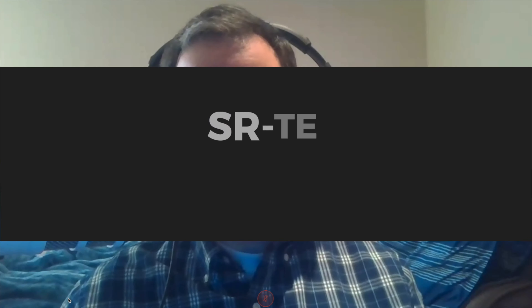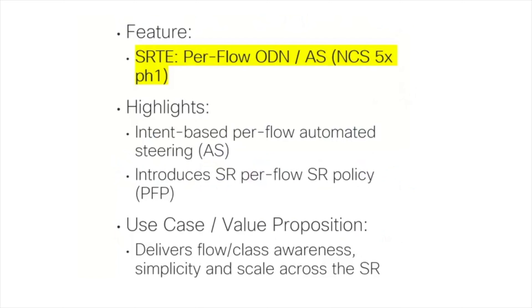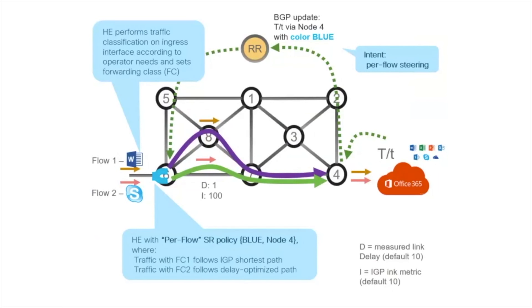Now we cover SR Traffic Engineering innovations in IOS XR 7.2.1, focusing on per-flow ODN — On-Demand Next Hop — and per-flow automated steering. The objective is to take intent-based automation to the next level. Automated steering — the ability to steer traffic automatically for a particular service or destination — has been shipping for a while, but now we allow it at the per-flow level. For this, we introduce a new concept called the Per-Flow Policy, or PFP.